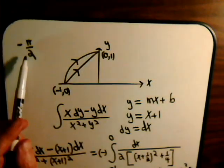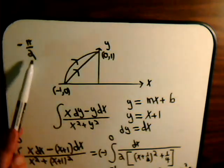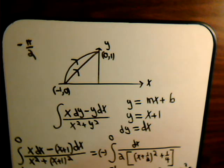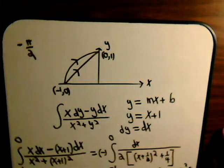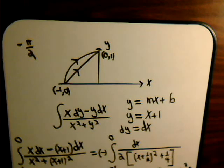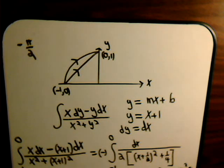We get the same answer, minus pi over 2, as when we integrated over the circular curve. In each case the result is the same, meaning for this type of integral the only thing that matters is the endpoints — the path taken is irrelevant. This leads to the question of whether a line integral is path-independent, which relates to whether we have a conservative or non-conservative field, and that will be tackled in the next video.